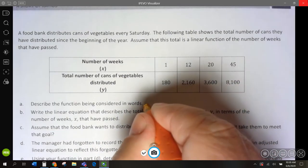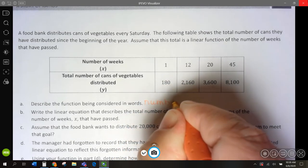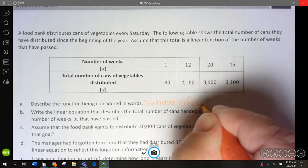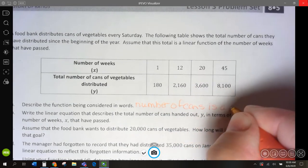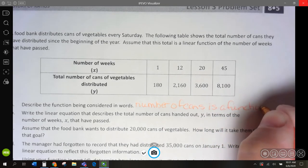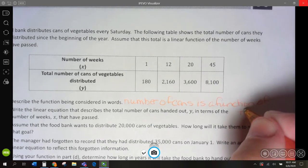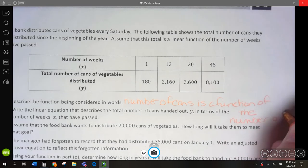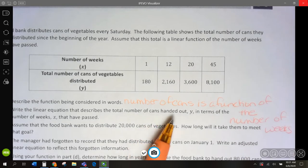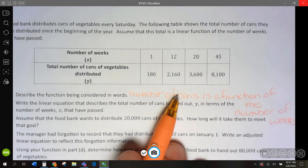So I'm going to say the number of cans is a function of the number of weeks. The number of cans is a function of the number of weeks. The more weeks we have, the more cans we're going to get.